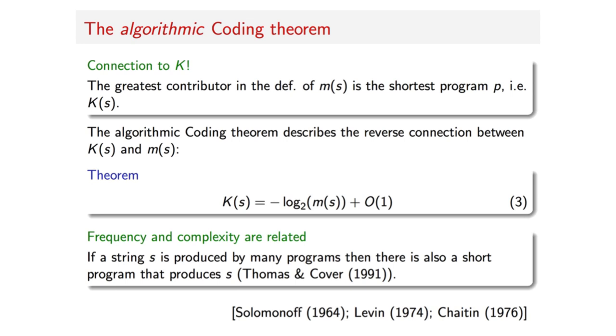In other words, if a string is produced by many computer programs, then there is also a short computer program that produces the string. And if a short computer program produces a string, then it will also be more likely to be produced by more computer programs.